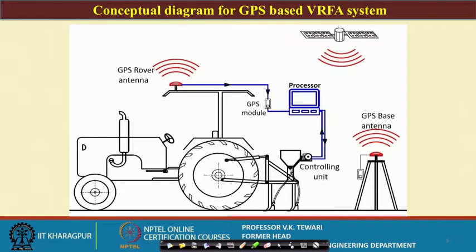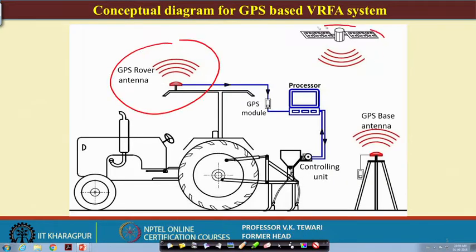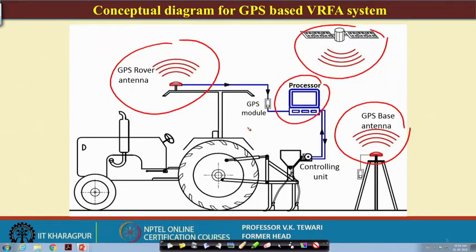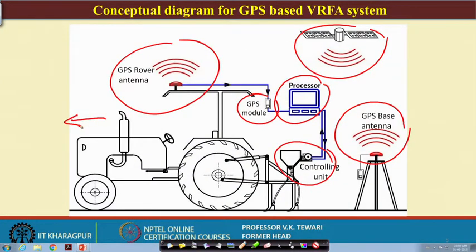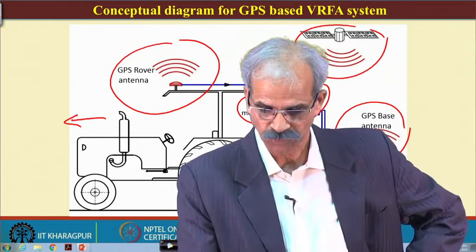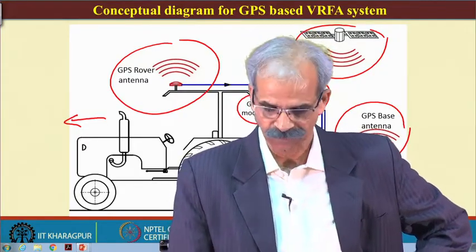This is the conceptual diagram of a GPS-based system. You can see the GPS rover here, then the satellite — the GPS antenna base is outside — and then the processor with the GPS module. There is a controlling unit and the location where we are going to apply. The tractor moves in this direction; the base antenna and processor store the information, and when the tractor goes to a particular grid or location, it identifies it and the controlling unit performs the application.